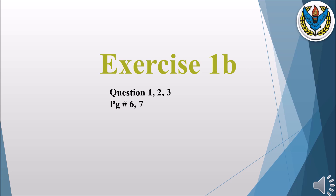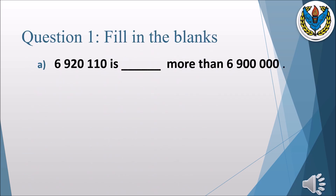I hope you have not only understood those concepts but also practiced the questions yourself. Today we will talk about question number one, two and three from exercise 1b. Let's start our first question: Question number one, fill in the blanks. Part A: six million nine hundred and twenty thousand one hundred and ten is dash more than six million nine hundred thousand. More than means to add — we have to find what is to be added in six million nine hundred thousand.